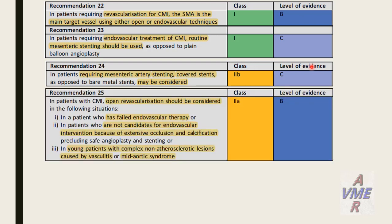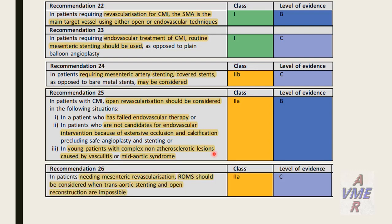In patients with chronic mesenteric ischemia, open revascularization should be considered in the following situations: patients who have failed endovascular therapy; patients who are not candidates for endovascular intervention because of extensive occlusion and calcification including safe angioplasty and stenting; and young patients with complex atherosclerotic lesions caused by vasculitis or mid-aortic syndrome.